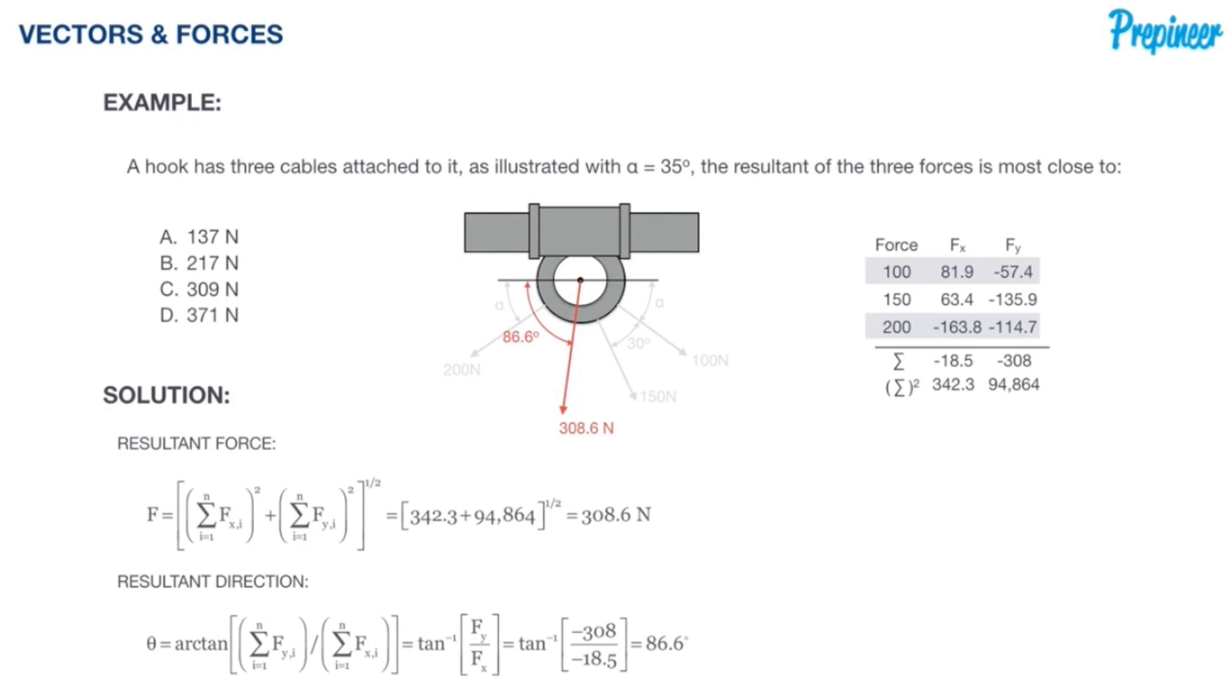How do you know which way that 86.6 degrees is acting? How come I went from the left to the force vector instead of going the other way? If we look over at the sum, our x components and our y components we have negative 18.5 and negative 308.